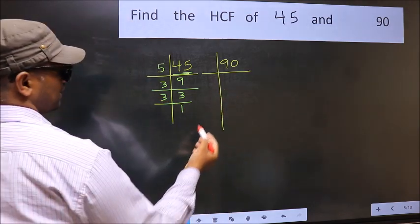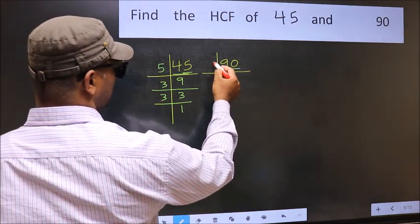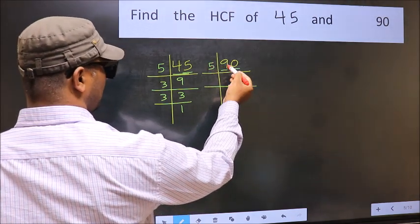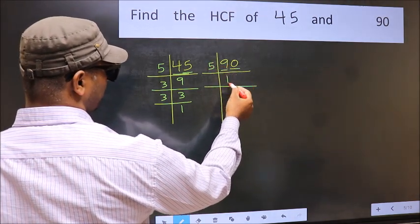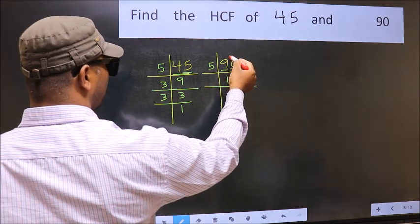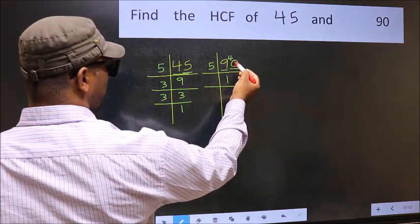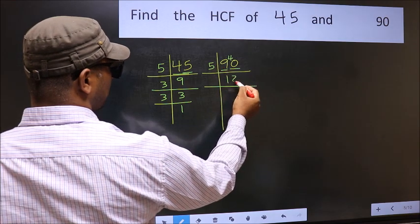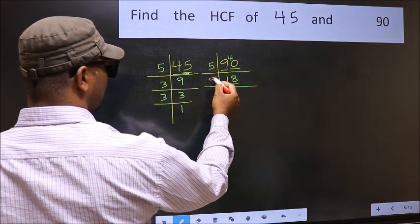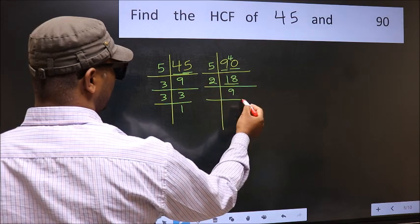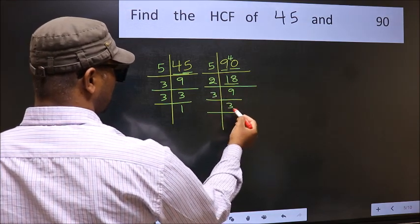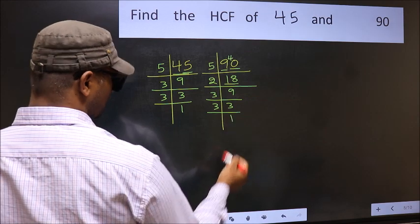Now the other number, 90. Last digit is 0, so take 5. The first digit is 9. A number close to 9 in the 5 table is 5 times 1 is 5; 9 minus 5 is 4, carry forward to get 40. 5 eights are 40. Now 18 is 2 nines; 9 is 3 times 3. 3 is a prime number, so 3 times 1 is 3.